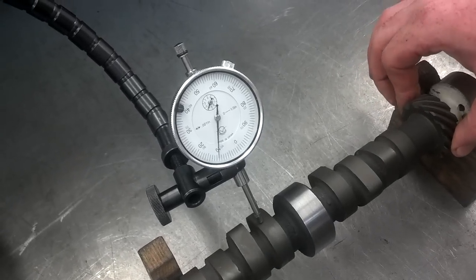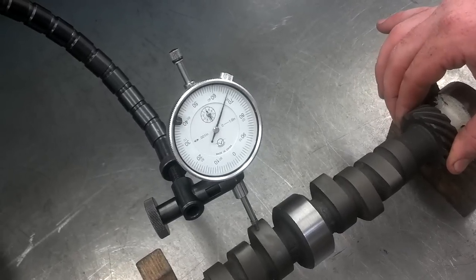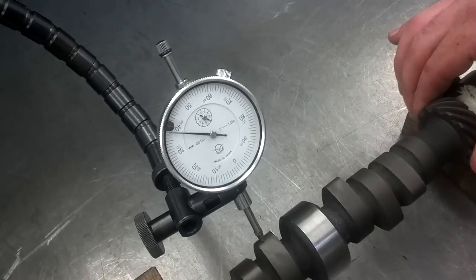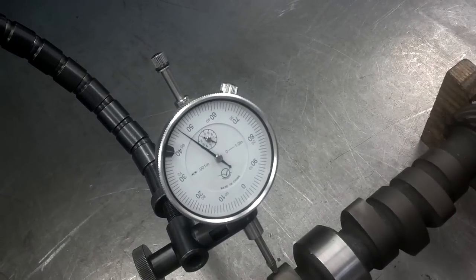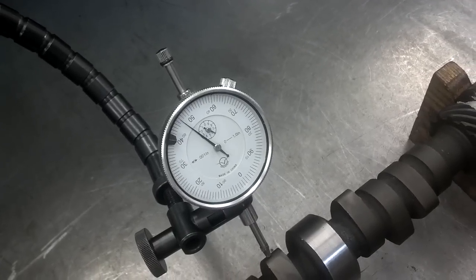We're going to find out how much the lobe lifts off that base circle. So, one full revolution, two full revolutions, and 47. So that means it's .247 inches.